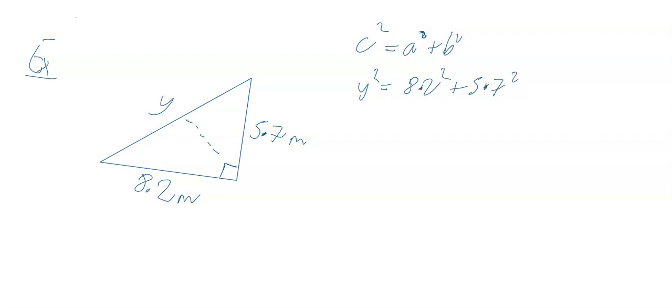I'm going to leave my calculator out to do this one. The numbers aren't just as nice, but nothing to worry about. I'm going to do 8.2². On my calculator, 8.2² gives 67.24. Then I do 5.7², which works out to be 32.49.